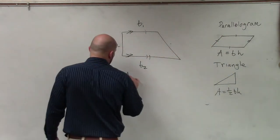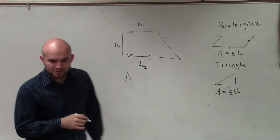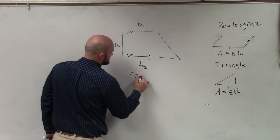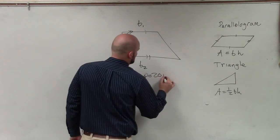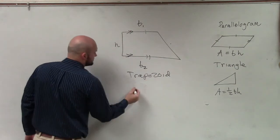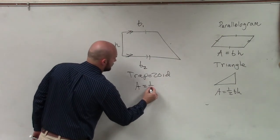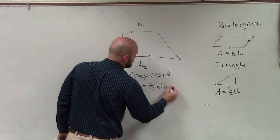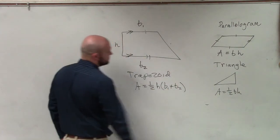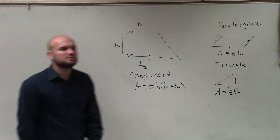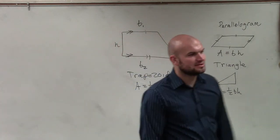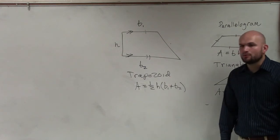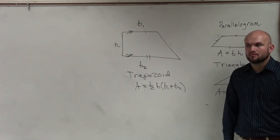Therefore, the area of a trapezoid—make sure you have this written out. For our trapezoid, the area equals one half height times base one plus base two. So you're going to add the bases, multiply by the height, and multiply by one half.